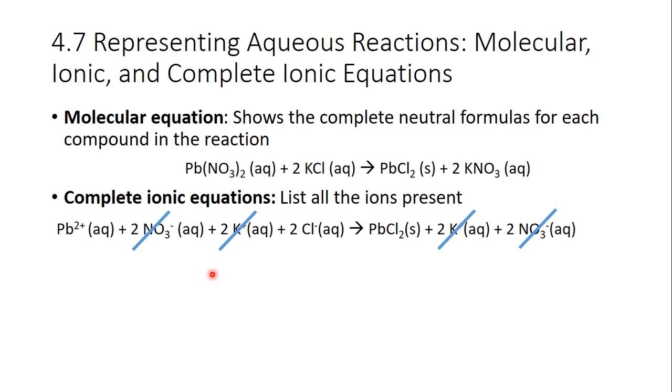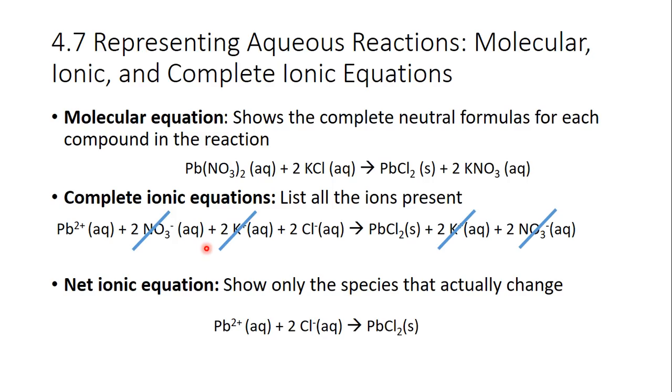The net ionic equation, you show only the species that have not been canceled out or the ones that actually change. And so if we drop the ions that have been crossed out, we see we have lead plus two chloride makes lead chloride. That is the chemical reaction that is happening in this big equation here.